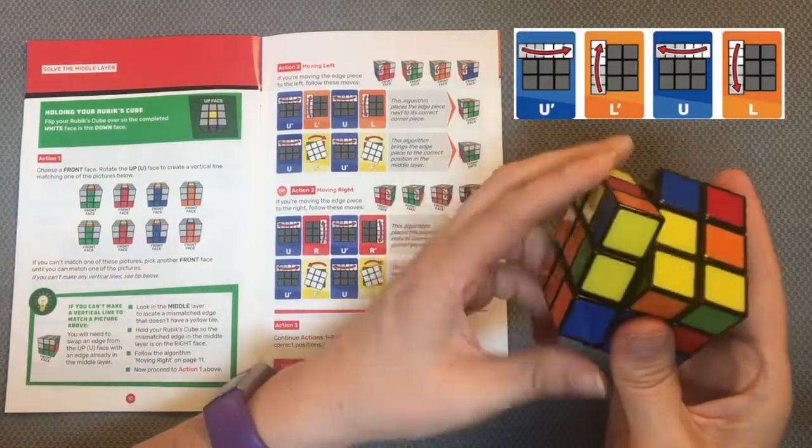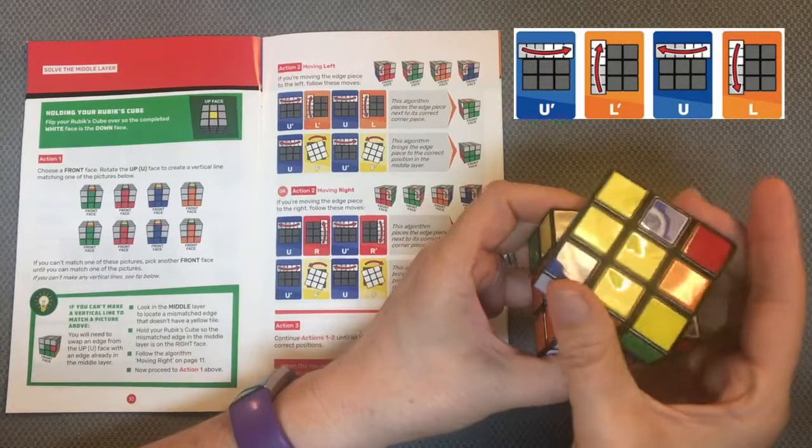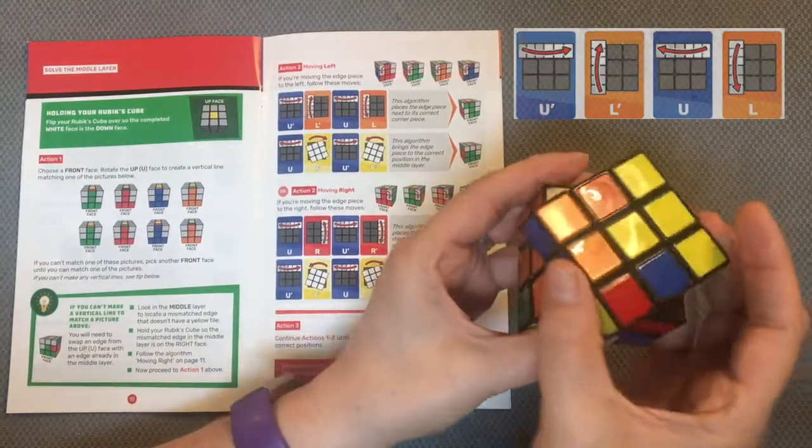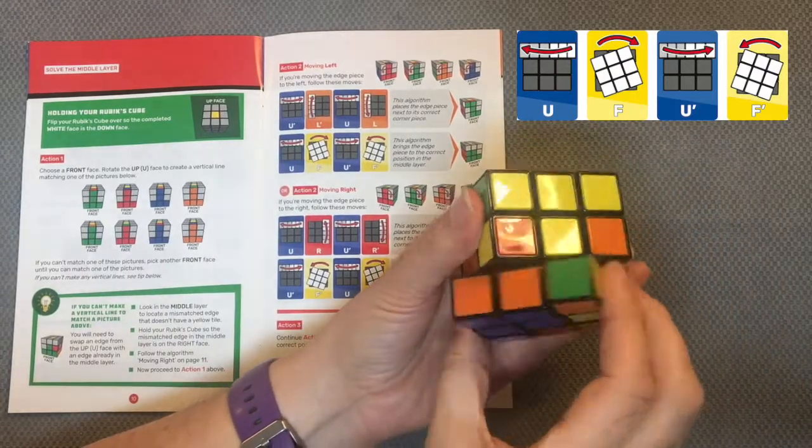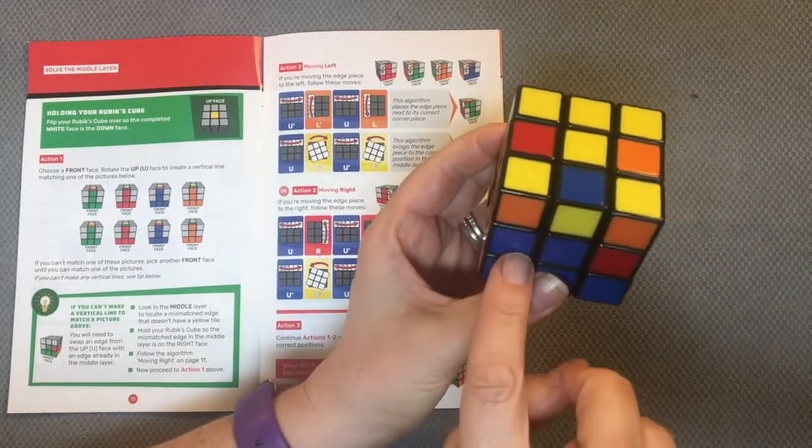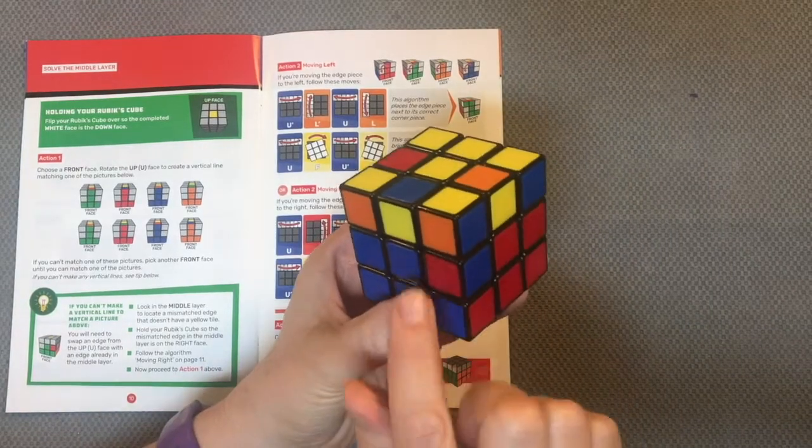Up to the right, left away, up to the left, left towards me, up to the left, front to the right, up to the right, front to the left. There, I have solved that piece.